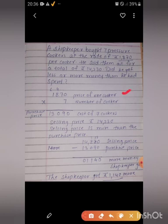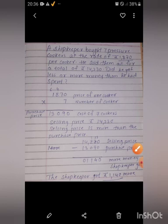1870 multiplied by 7. 7 is the number of cookers. 1870, price of one cooker, multiplied by 7, number of cookers. 7, 0, 0. 7, 7s are 49. 9 here right, 4 carry on the 100 place. 7, 8s are 56. 56 and 4, 60. 0 right, 6 carry on the 1000 place. 7, 1s are 7 and 6, 13. 13,090 is the purchase price and cost of 7 cookers.